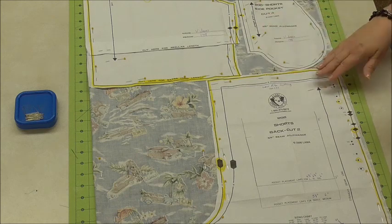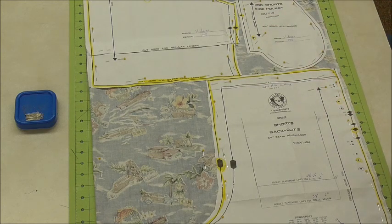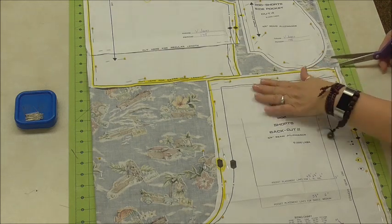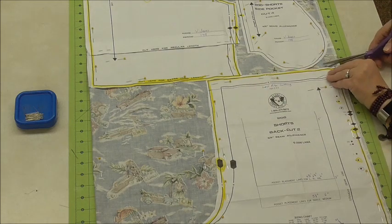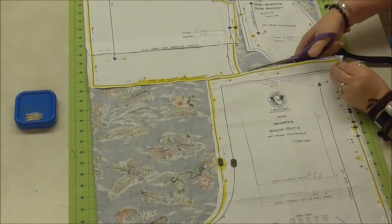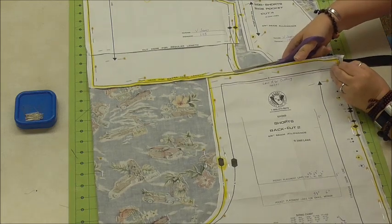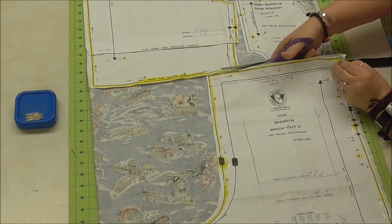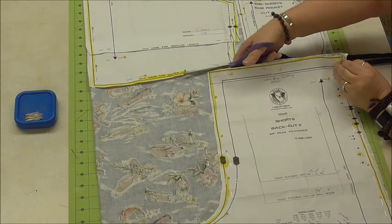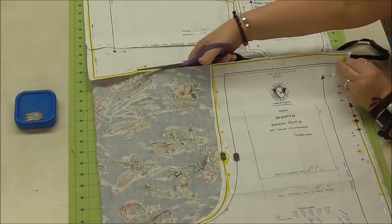Trying to cut out individual pieces when you have a great big huge chunk like this is difficult. So the first thing I'm going to do is rough cut. That means I'm not cutting on the cutting line, I'm cutting kind of in between the pattern pieces being very careful because mine are very close together here but I'm not cutting anything off.